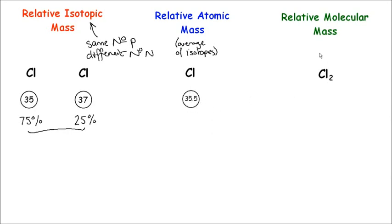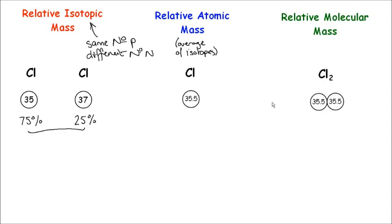When it comes to relative molecular mass, this tells us the mass of a molecule. Chlorine is diatomic and so it's found in pairs as Cl₂ — that means two chlorine atoms stuck together. The total mass is the relative atomic masses combined, so the relative molecular mass of chlorine gas is 71, because that's the two relative atomic masses of 35.5 added together.